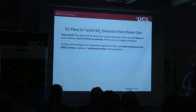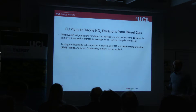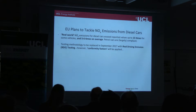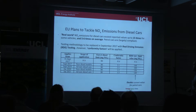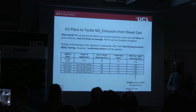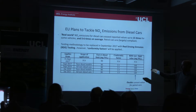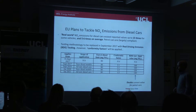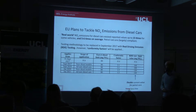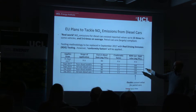To try and improve this, the testing methodology the EU employs will be replaced in September 2017 with what's called the real driving emissions testing. However, conformity factors will be applied. This means that although the legal limit for Euro 6 diesel cars is 80 milligrams of NOx per kilometre, from September 2017 any new models, and from September 2019 all new diesel cars, will be allowed to exceed that value in real world emissions by 2.1 times.